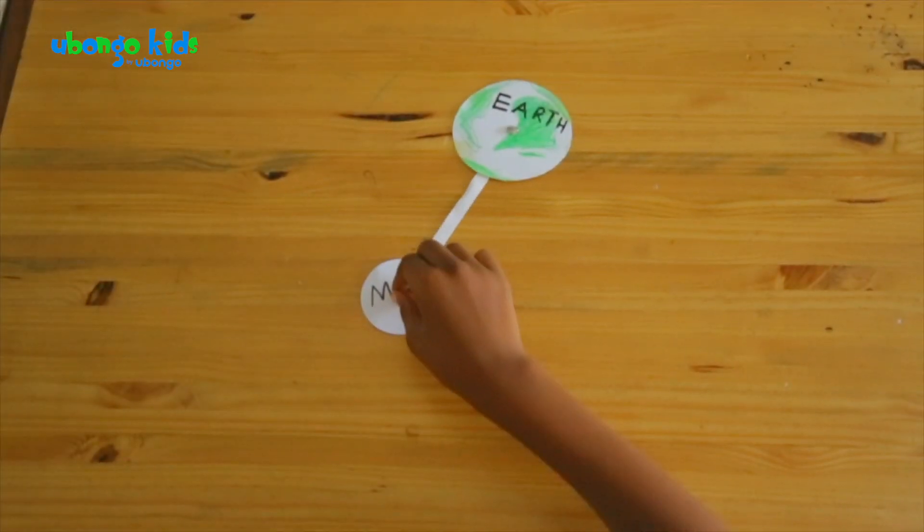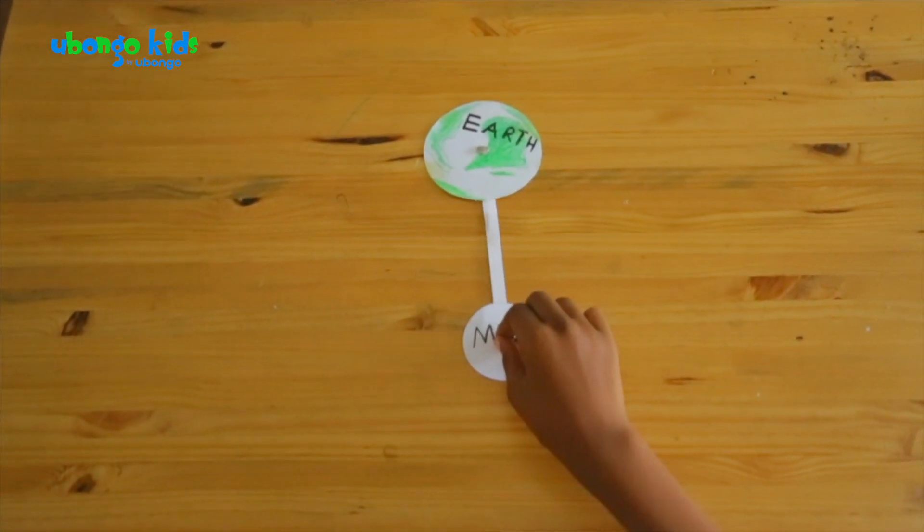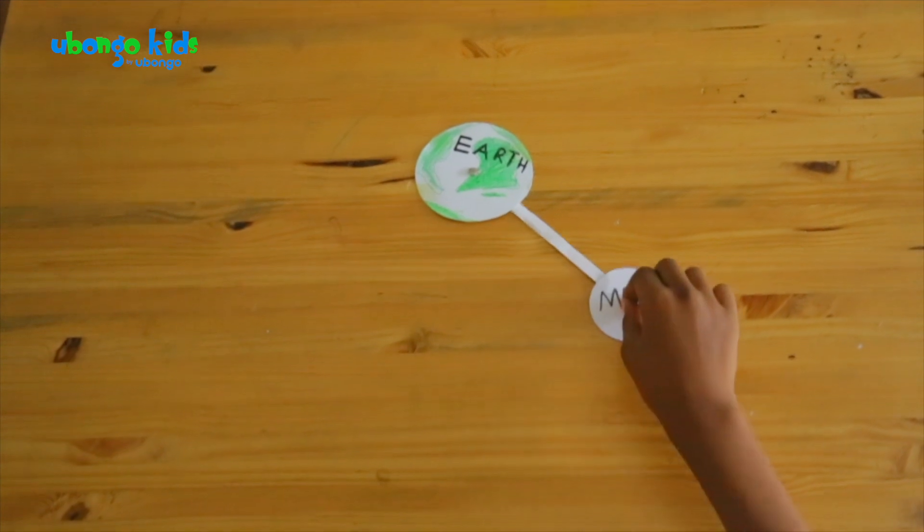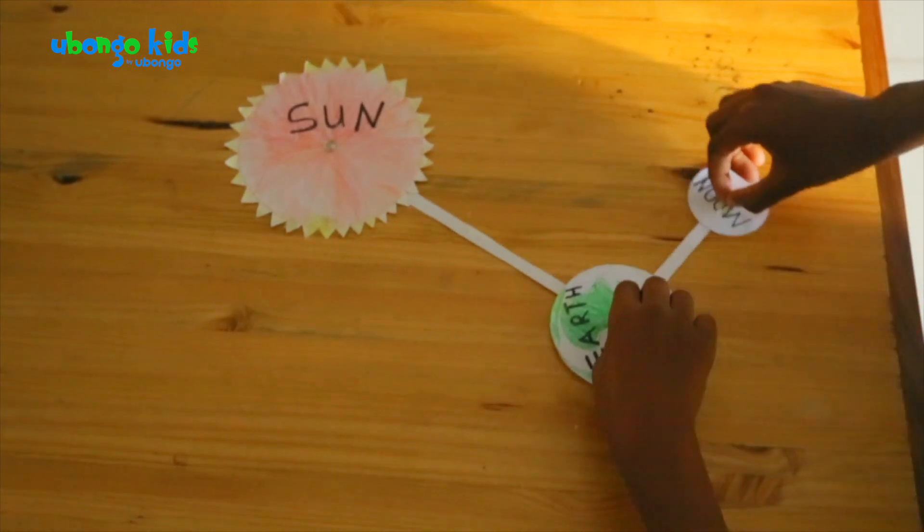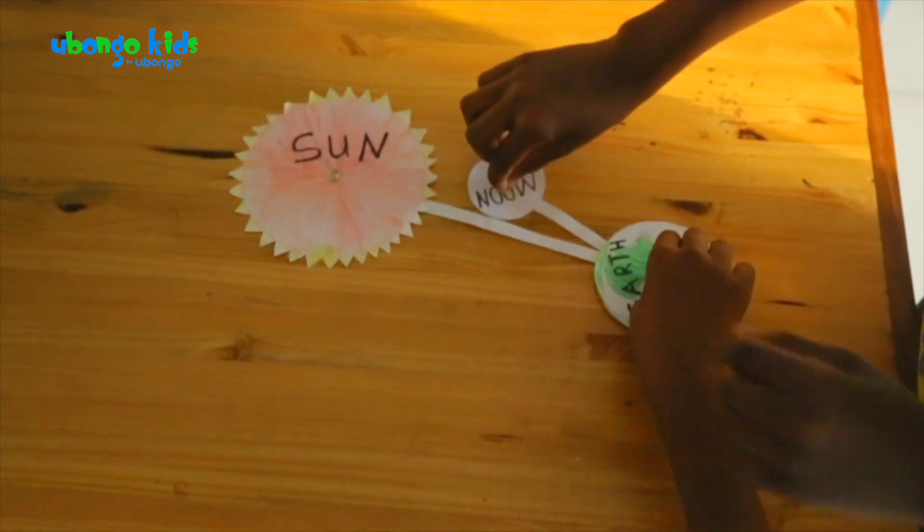The moon orbits the earth. It takes 28 days to complete one circle around the earth. That means both the earth and the moon orbit the sun together each and every day.